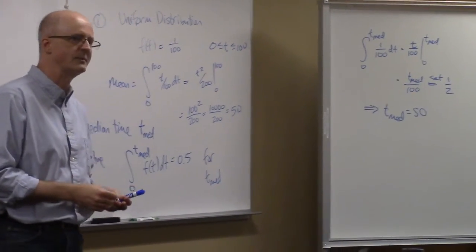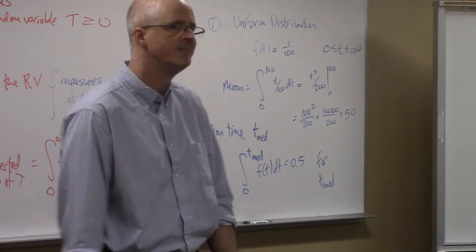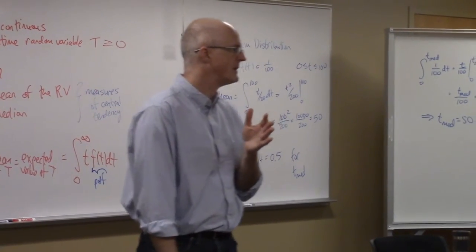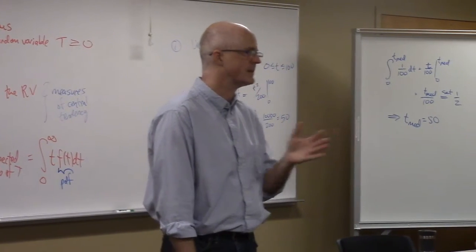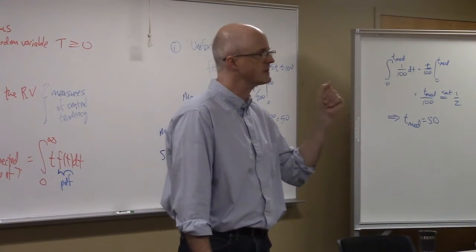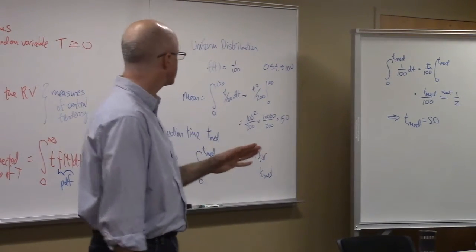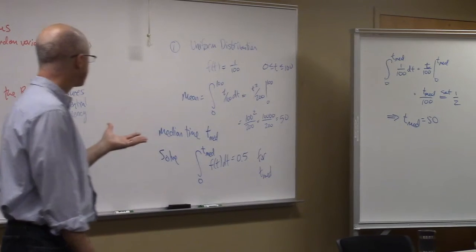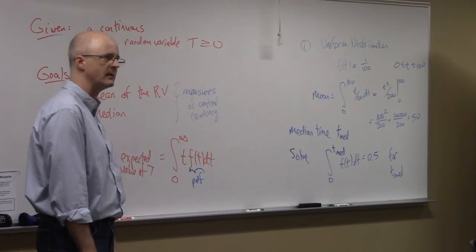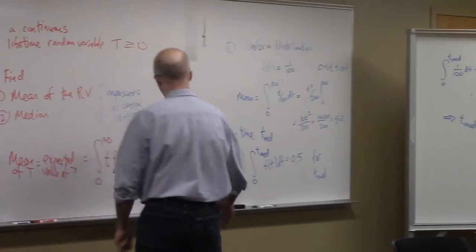With the uniform distribution, if that measured lifetime — it's probably not for people, but maybe for light bulbs — the units would be weeks, not years. All the light bulbs must fail by 100 weeks, which is about two years. You should expect the average of those data and the median to both be close to 50.